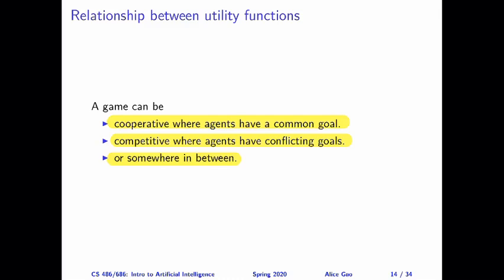To use a board game analogy: most board games out there are competitive. A few of them are cooperative, such as Hanabi, Ghost Stories, and Pandemic. And there are some board games that are in between — one example is Codenames, where you have teams of people; within the team you are cooperating, and between teams you are competing.